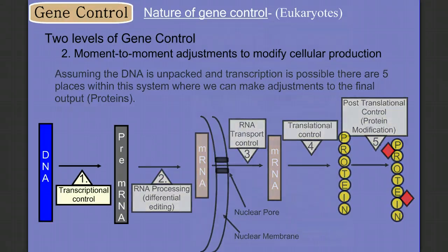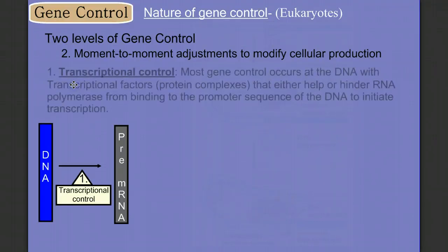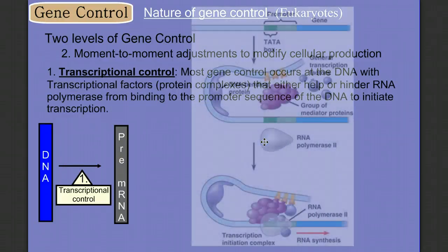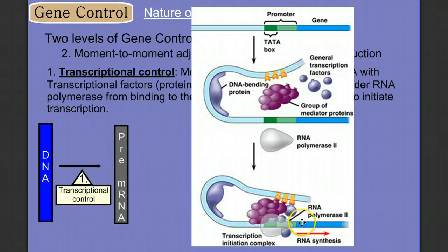Let's start with transcriptional control. The majority of our gene control occurs at the DNA or in the nucleus at transcription, where different proteins either help or hinder RNA polymerase in binding to the promoter region. We've seen this diagram showing clusters of proteins aiding RNA polymerase to bind to the DNA and engage in transcription or RNA synthesis.